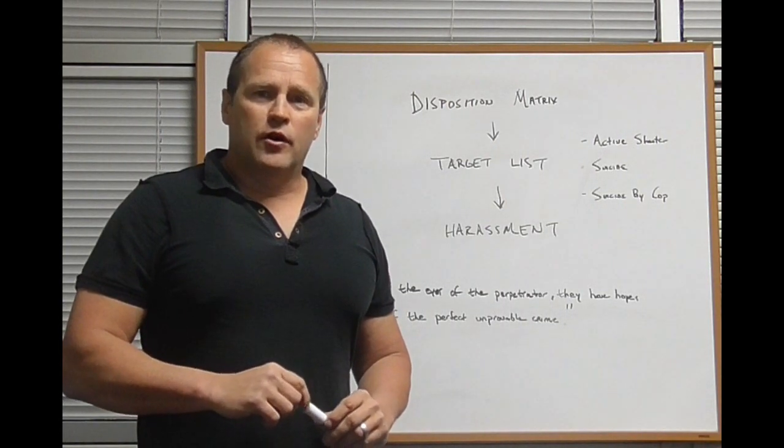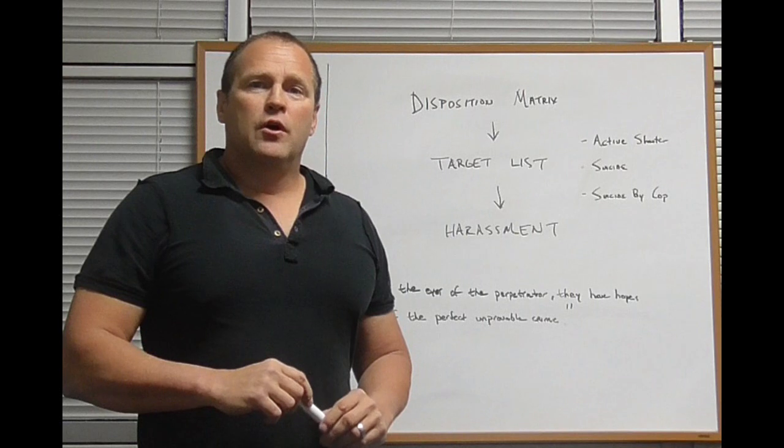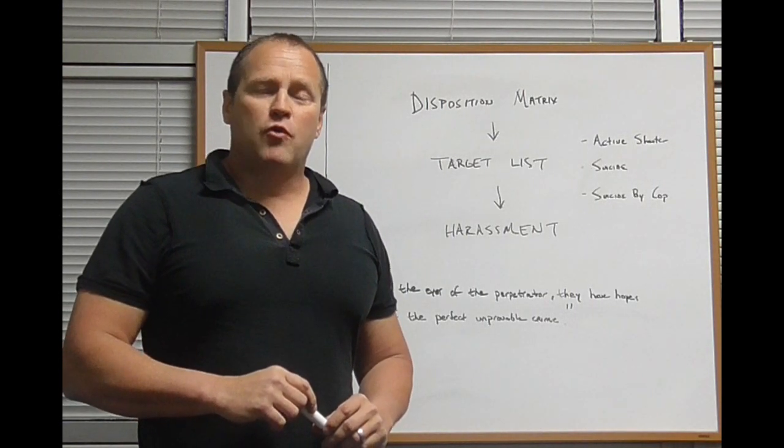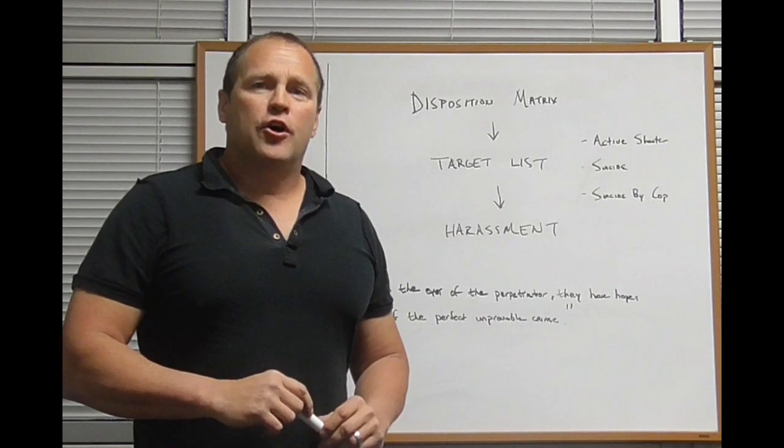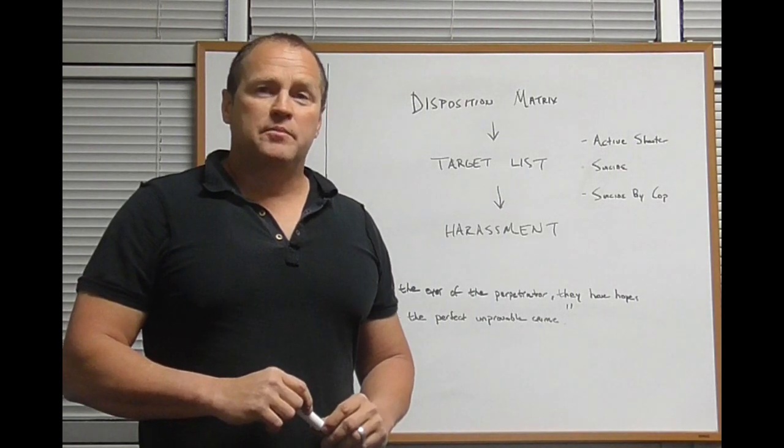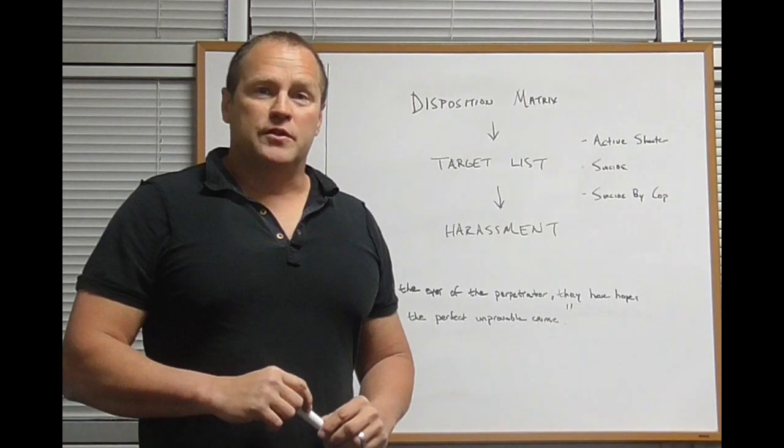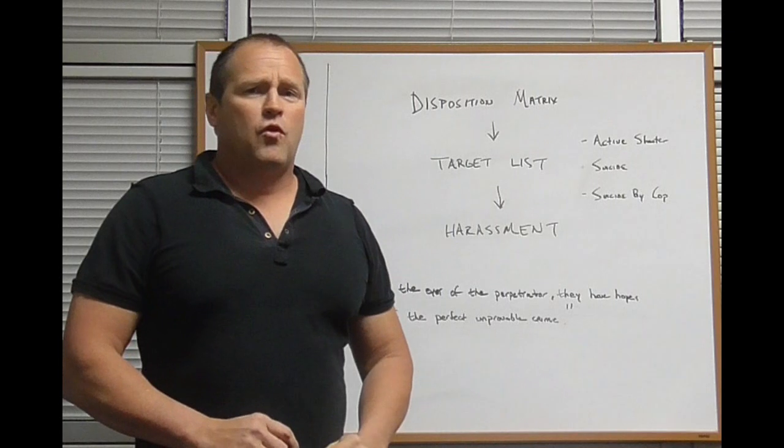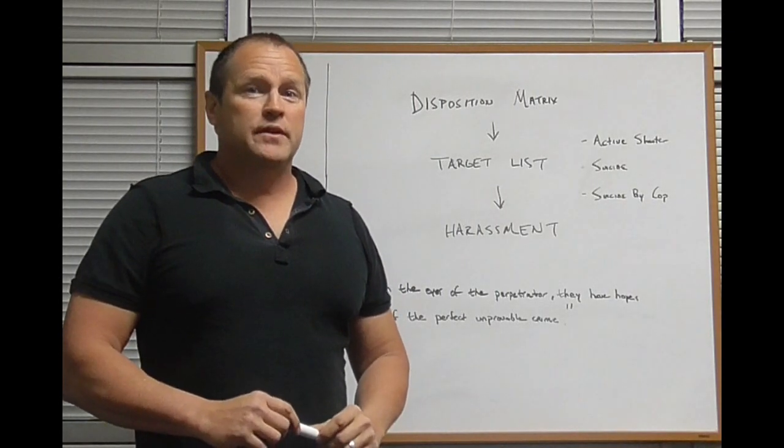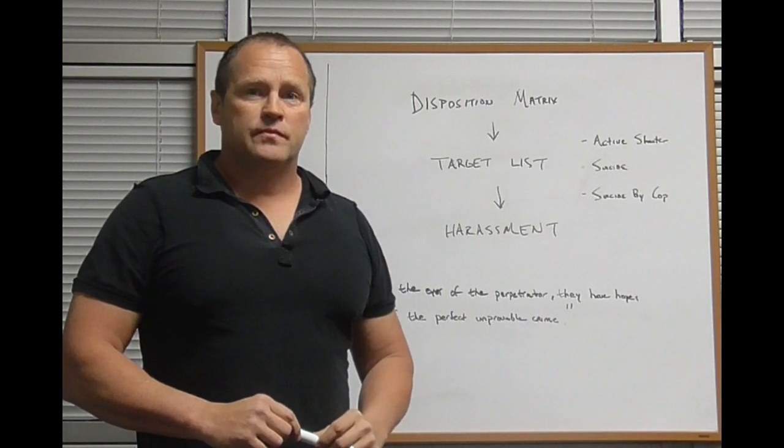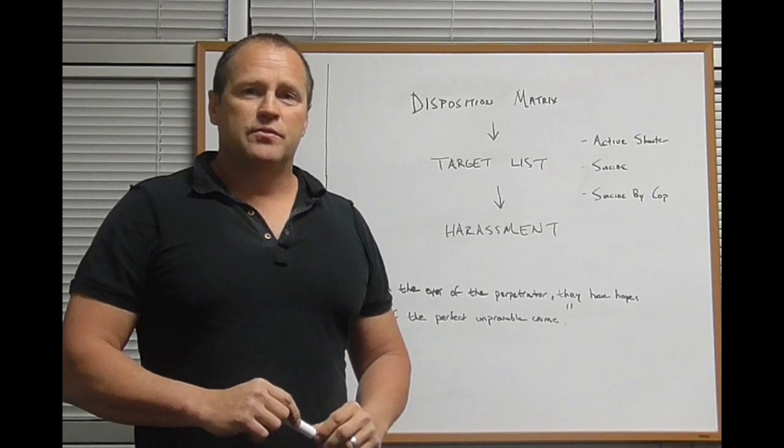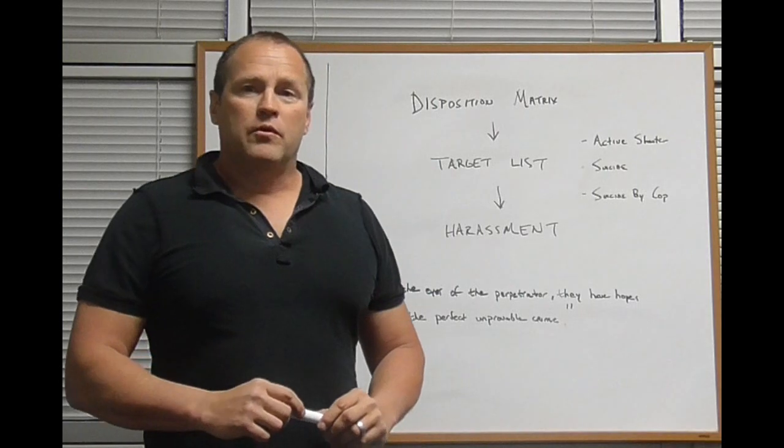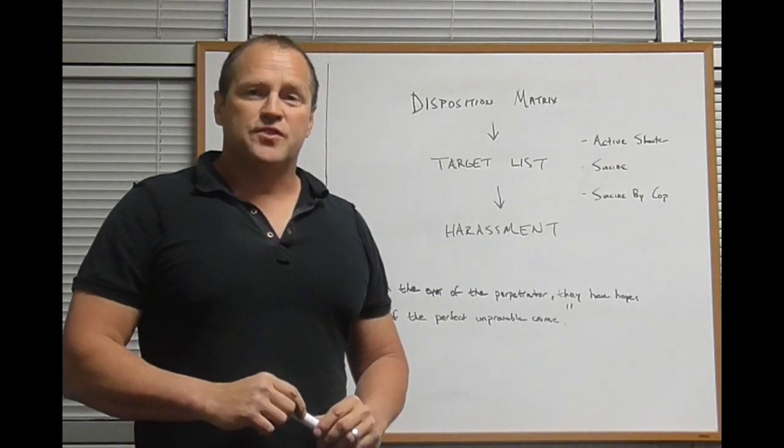Once again, the goal here is to force the targeted individual into a violent act, whether it be murder or suicide, under conditions which can plausibly be denied by the government. And this all goes back to this disposition matrix. It's not for foreign terrorists anymore. It's being used on U.S. citizens. In the past 15 years, we have seen the trend switch from where targeting has moved from criminals to innocent citizens.